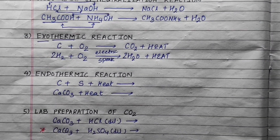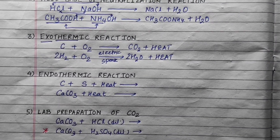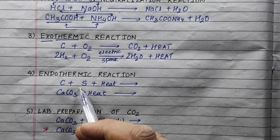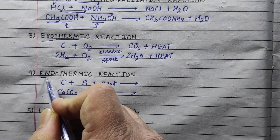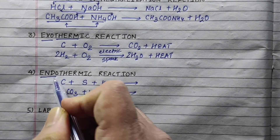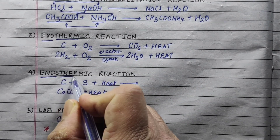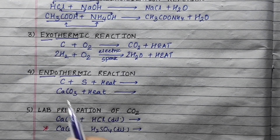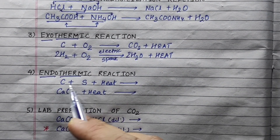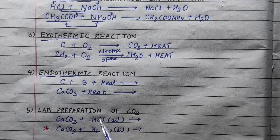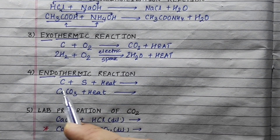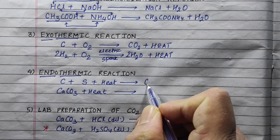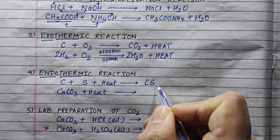Now we will see the endothermic reaction. Endo means internal thermo — heat is absorbed. In this case, the reaction requires heat supply. So: carbon plus sulfur plus heat gives carbon disulfide, CS₂.